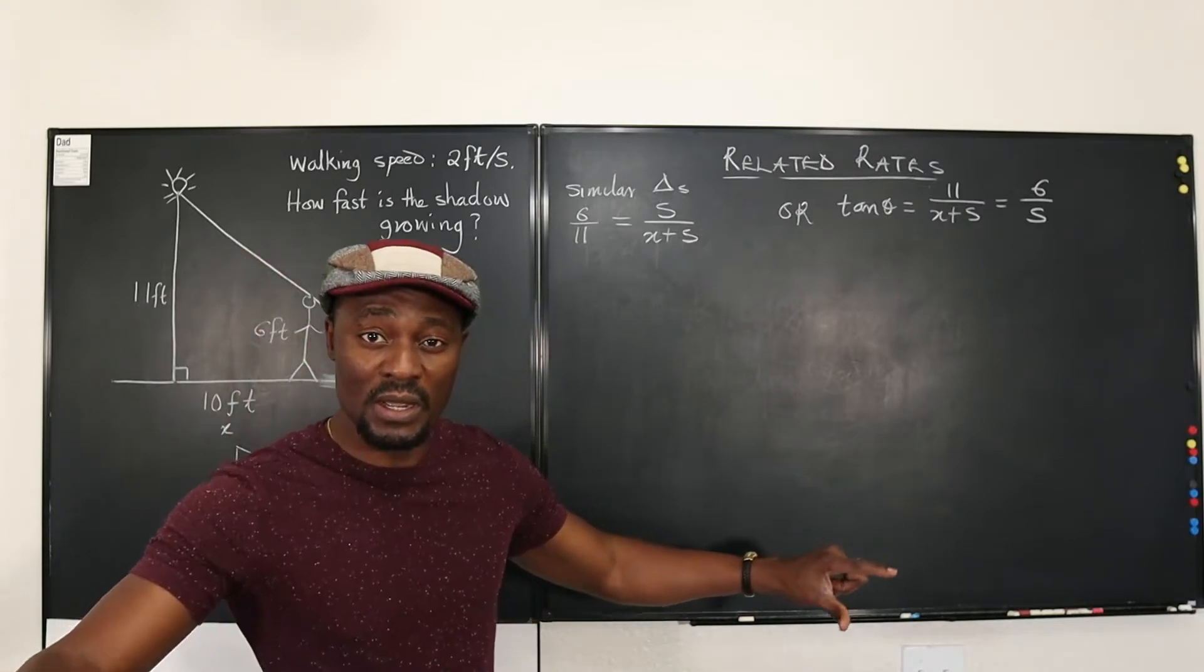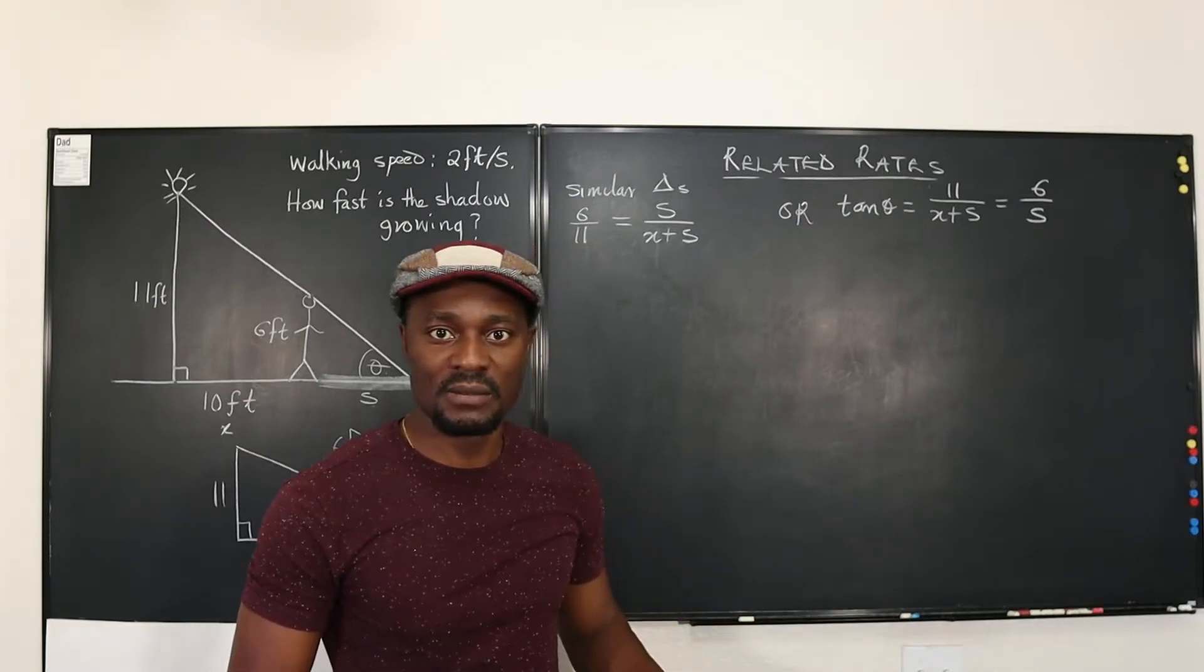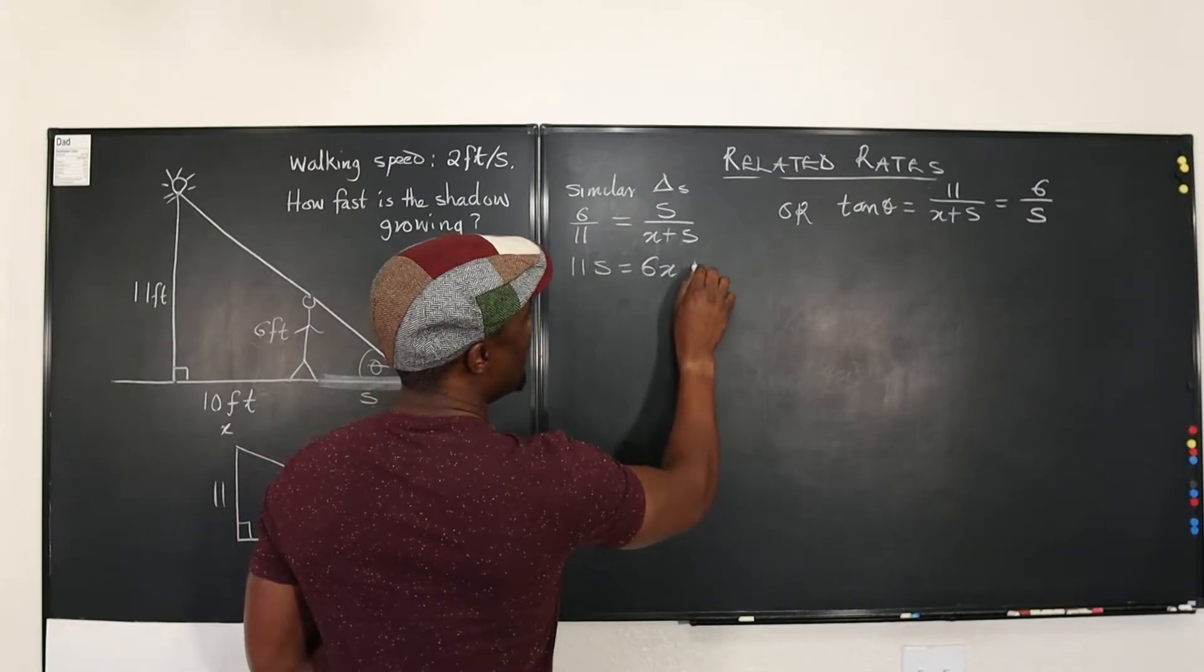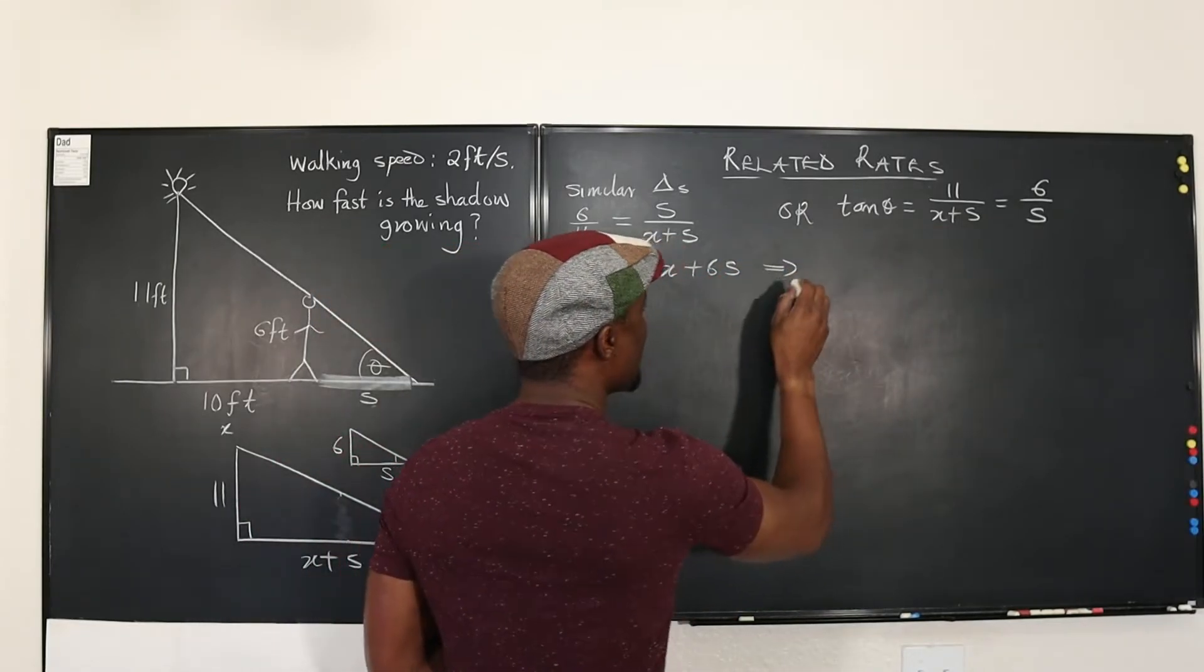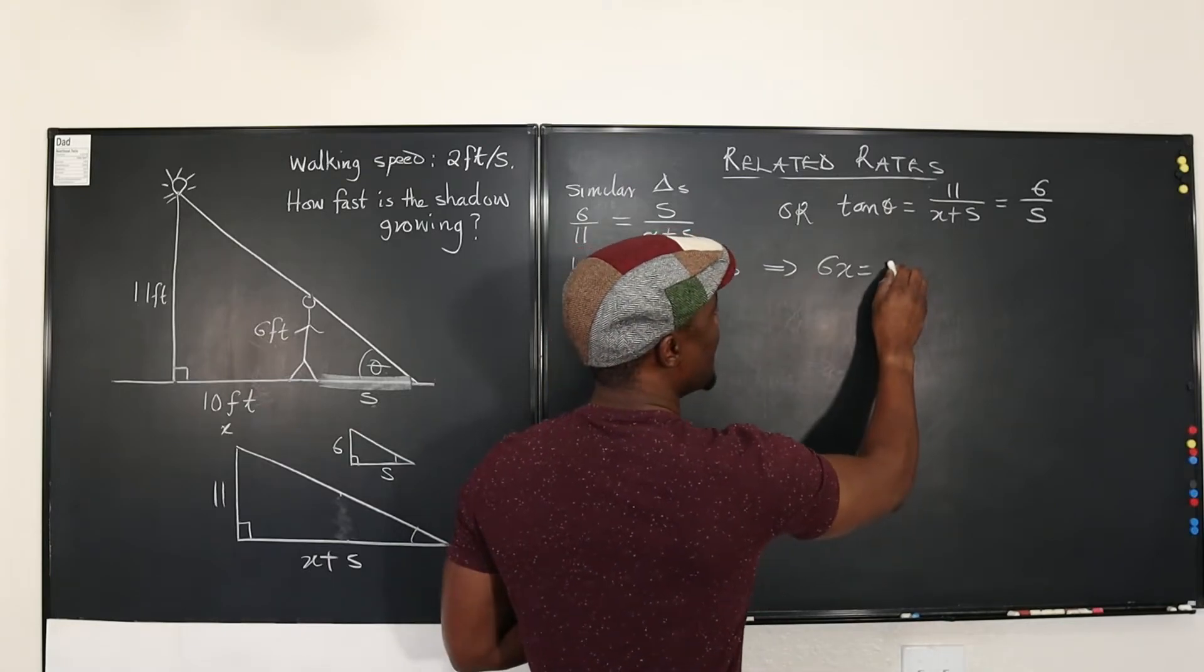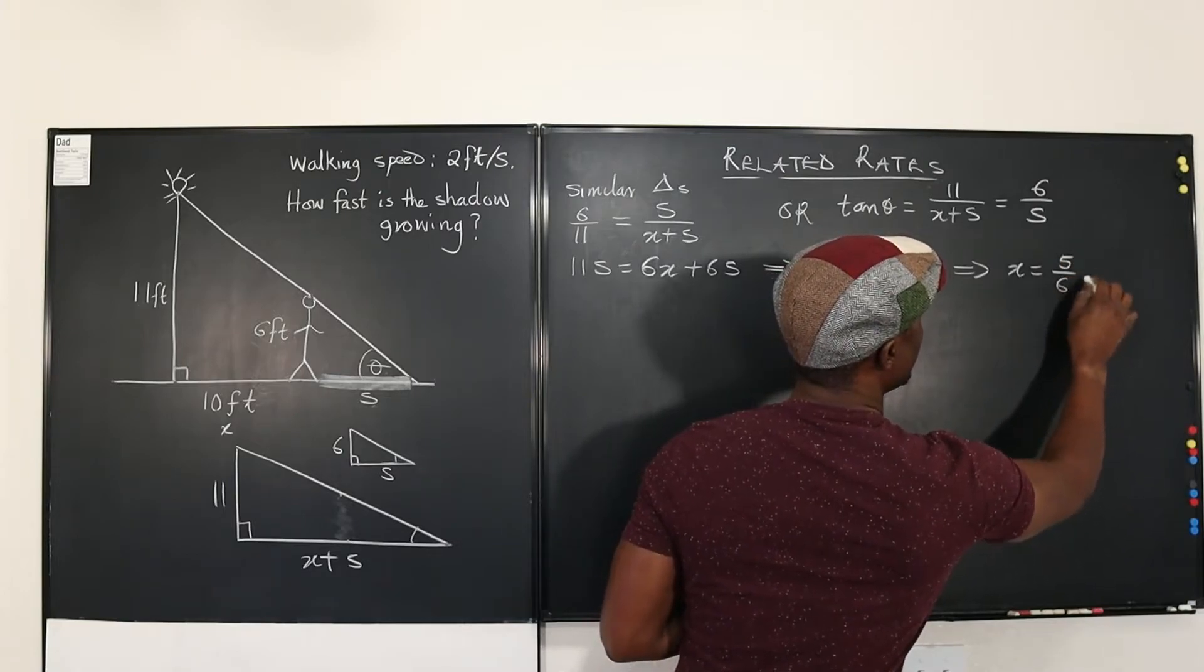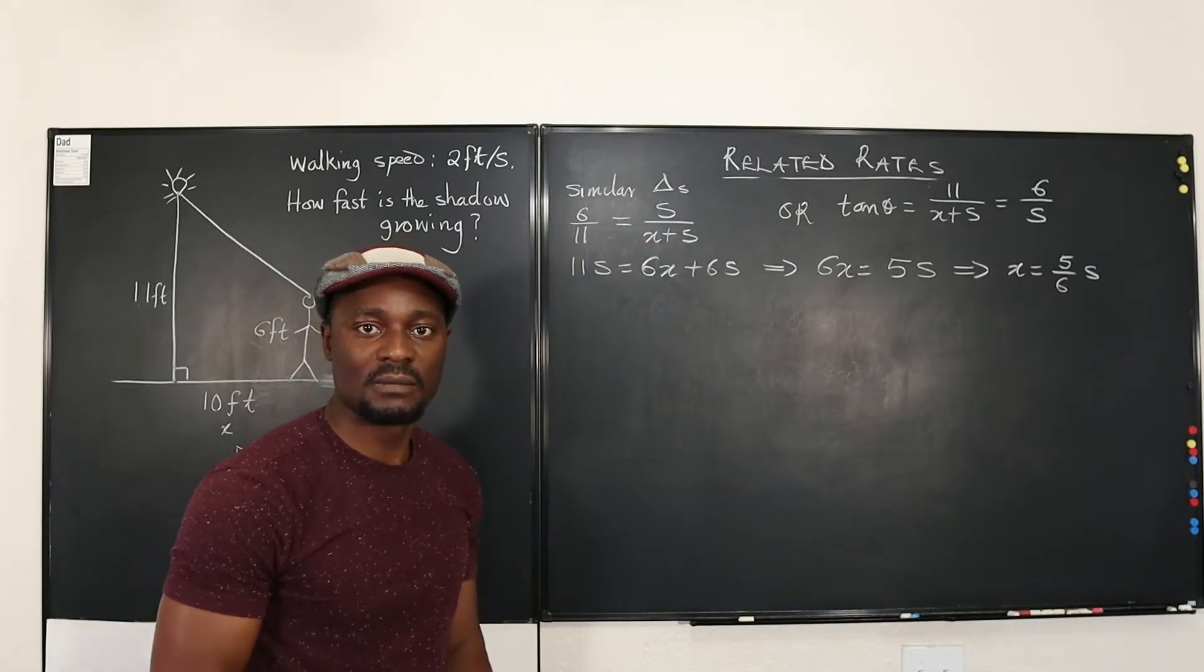So now I need to write a formula connecting X and S. Why? Because X is changing, S is changing and those are the related rates. So now if I cross multiply, I just want something easy to work with. I'm going to have 11S equals 6X plus 6S. If you do that with this, you'll get the same thing. And this tells you that if you put X, isolate X and you move S to the other side, you're going to have 6X equals 11S minus 6S gives you 5S. Which tells you that X is equal to 5 over 6 S.